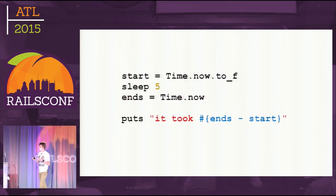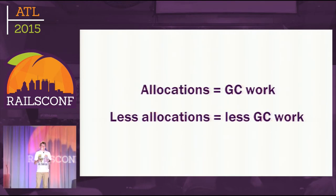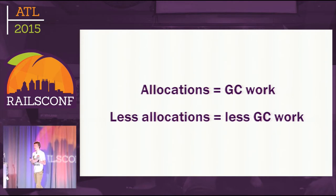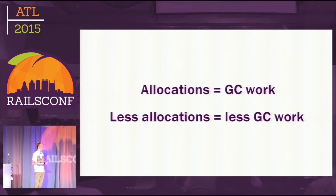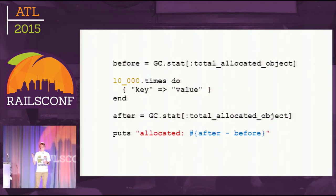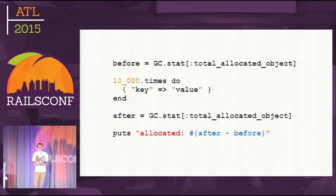Here is a small example of how to measure timing — it's quite straightforward. And we also want to reduce the number of allocated objects in Ruby interpreter memory, because garbage collection is an expensive operation in Ruby. By allocating fewer objects, we leave less work for the garbage collector. Here is an example of how to measure the number of objects allocated in your code — we get statistics from the garbage collector and calculate it.